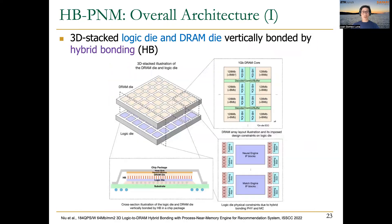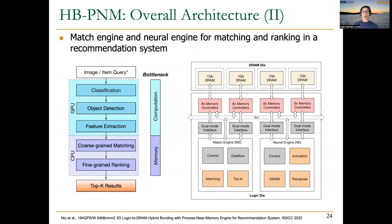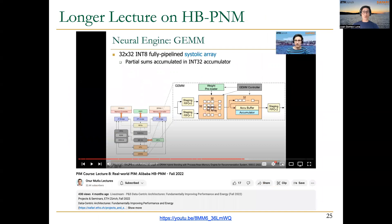From Alibaba, also for recommendation systems, we studied a three-stack architecture with logic die and DRAM dies vertically bonded with hybrid bonding. In the logic layer there are two types of accelerators: the match engine and the neural engine. These are focused on accelerating specific steps of the recommender system — coarse-grained matching in the match engine and fine-grained ranking in the neural engine.